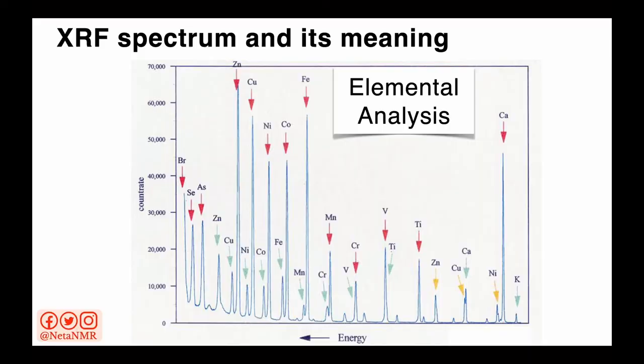But how do we get these energy values? Once the X-ray fluorescence is detected, we can obtain spectra that contain peaks at different energy values. Here's an example of an XRF spectrum. In an XRF spectrum, there are peaks that show up at different energies. And since we've already seen that each element has a specific energy value, by checking the energies where we have peaks in the spectrum, we can identify which elements are present in the sample.